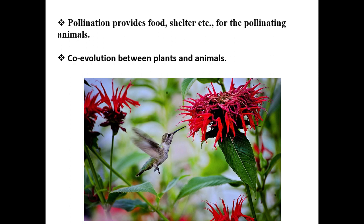Co-evolution refers to the fact that biotic agents involved in pollination belong to the animal kingdom, while the flower belongs to the plant kingdom. Both evolved in different periods and different environments but meet at a particular situation — that situation is pollination. Behind pollination, co-evolution between plants and animals exists.